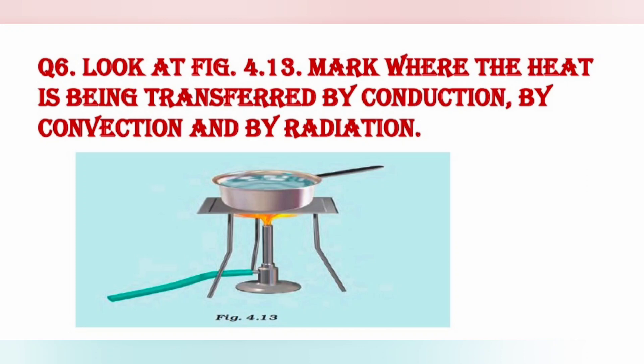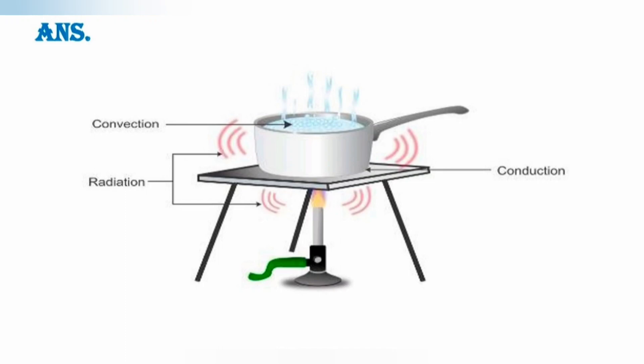Next question: look at the figure given below and mark where heat is being transferred by conduction, by convection, and by radiation. यहाँ आपको एक figure दी गई है. Conduction process जो है वो pan में हो रही है from one end to another. Convection जो process है वो water में हो रही है, क्योंकि water molecules move कर रहे हैं from the hotter end to the colder one. And radiation is from the gas stove to the pan.